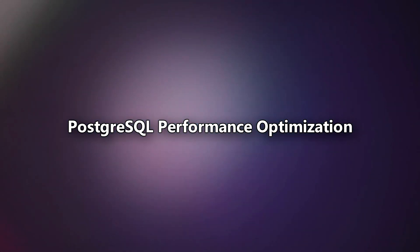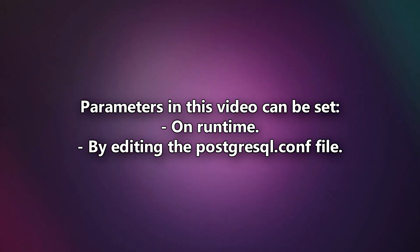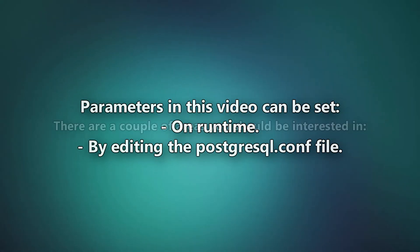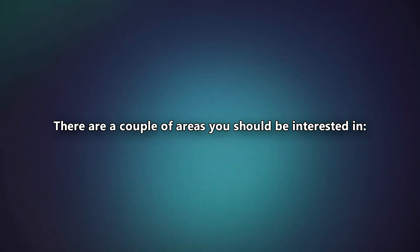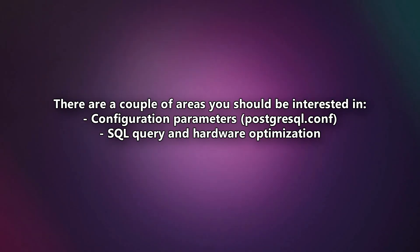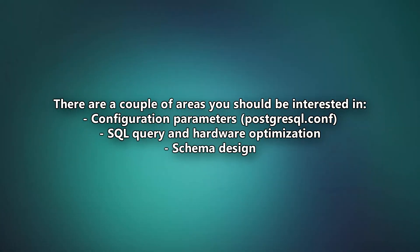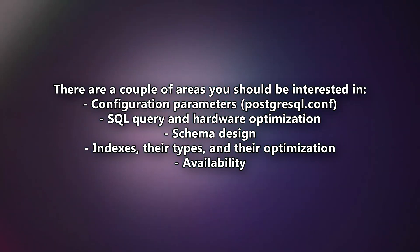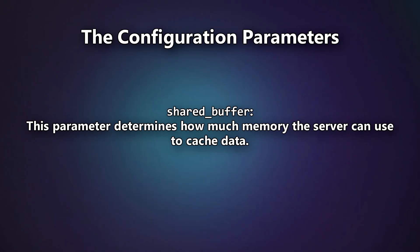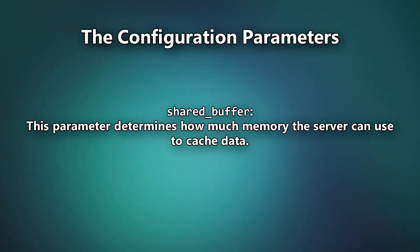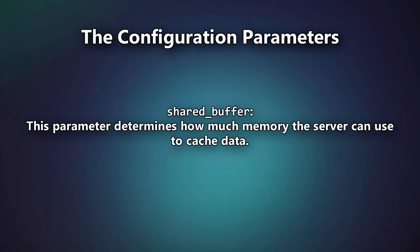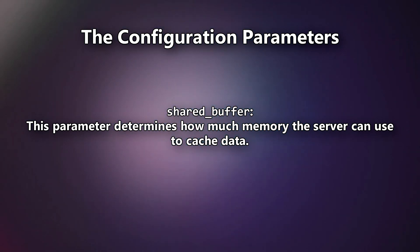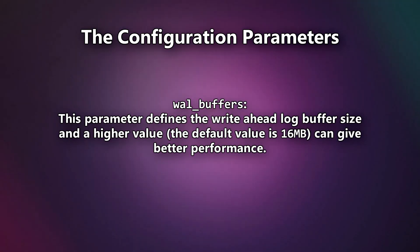There are a couple of things you should know to properly optimize your PostgreSQL instances for performance. The areas you should be looking at are configuration parameters, hardware optimization, schema design, indexes and their types, availability, and memory management. Ensure you are using a powerful server, then start from the configuration parameters — everything else will follow suit.